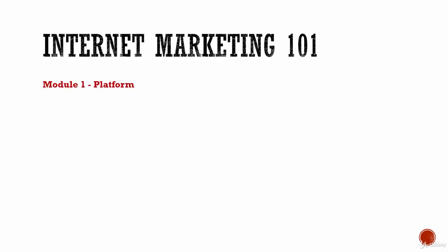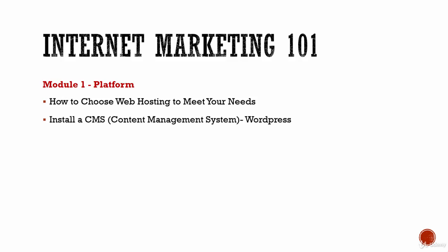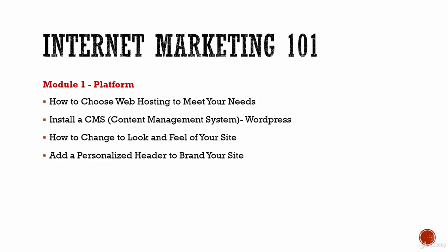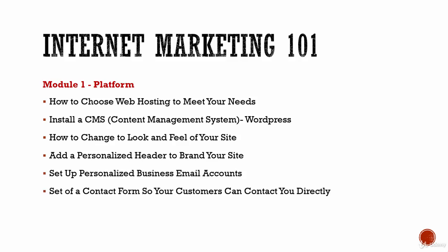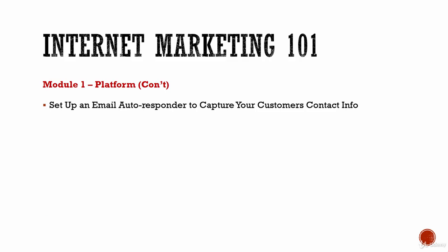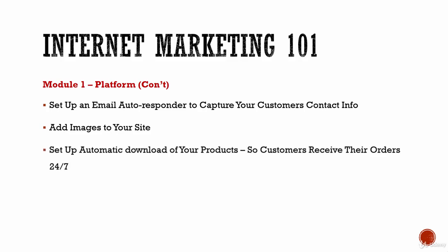In Module 1, the Platform, we'll learn how to choose web hosting that meets our needs and install WordPress, a content management system that makes things very simple to set up and manage. We'll change the look and feel of our site with themes, add a personalized header to brand your site, set up personalized business email accounts, a contact form, a blog to educate customers, and an email autoresponder to capture customers' contact information. We'll also add images to make the site more visually appealing and set up automatic downloads of your product.